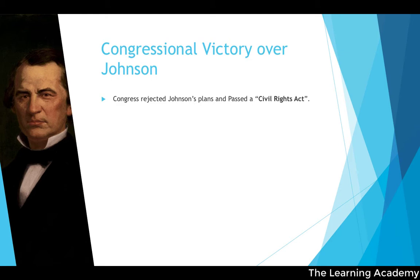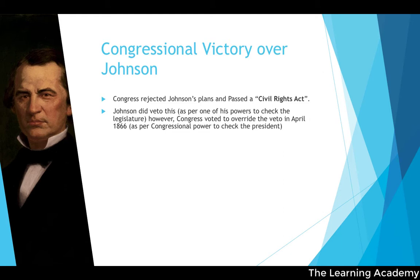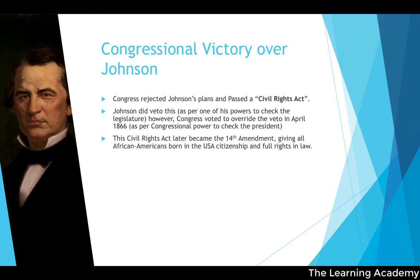Congress rejected Johnson's plans and passed a Civil Rights Act. Johnson vetoed this, using the presidential power to check Congress, but Congress overrode the veto in April 1866. This Civil Rights Act later became the 14th Amendment, giving all African Americans born in the USA citizenship and full rights in law.